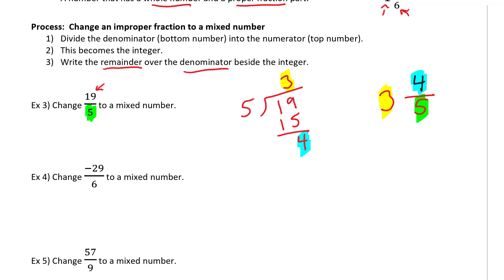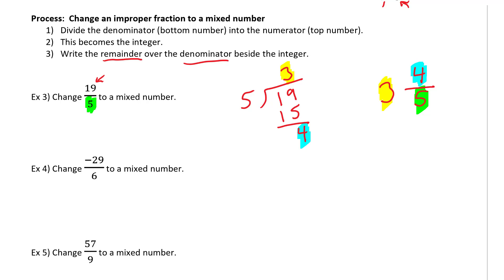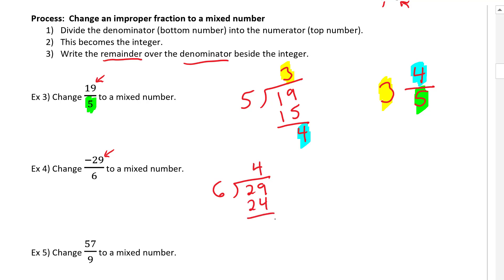Let's try example number four: change negative 29 over six into a mixed number. The numerator has a larger magnitude than the denominator, even though it is negative. We're going to divide the denominator into the numerator and forget about the negative sign for now. Six into 29 — how many times does six go in? Four times. Six times four is 24, remainder five. Four is our whole number, the denominator was six, the remainder is five. Don't forget this value is negative, so we put the negative outside. This negative applies to both the four and the five-over-six fraction — so the answer is negative four and five-sixths.